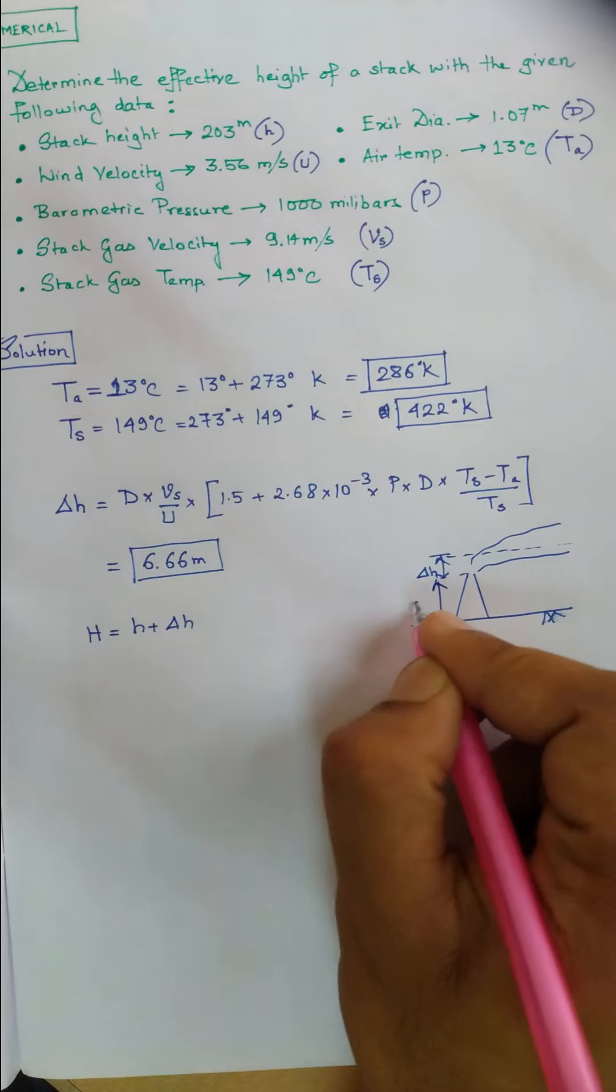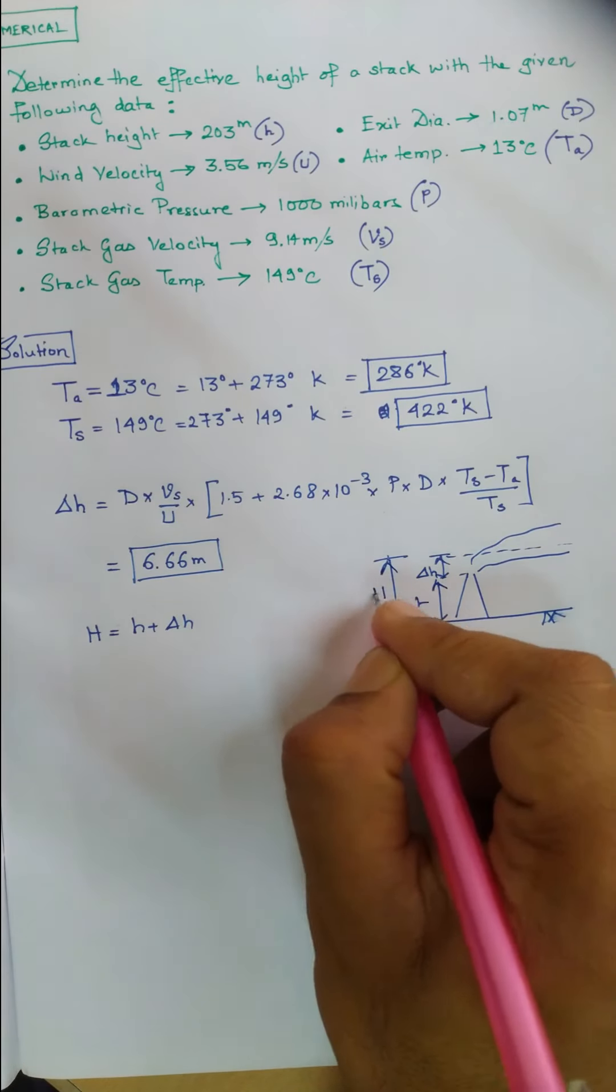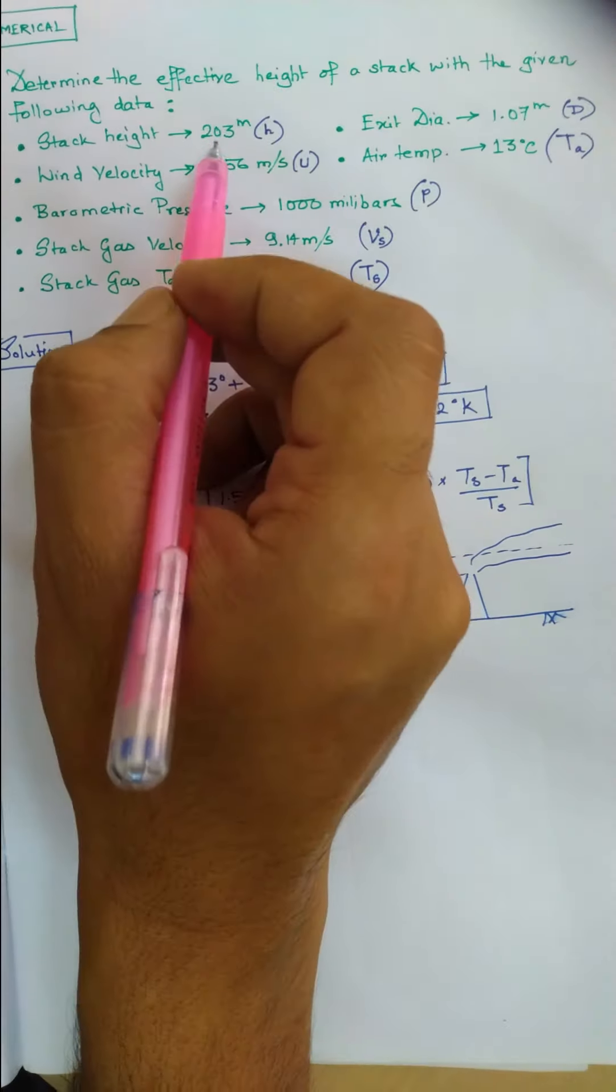And this one is small h. Together it becomes H, which is 203 plus 6.66 meters.